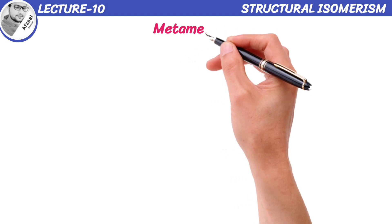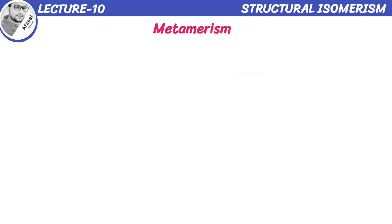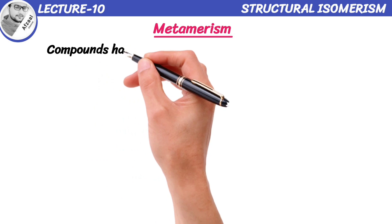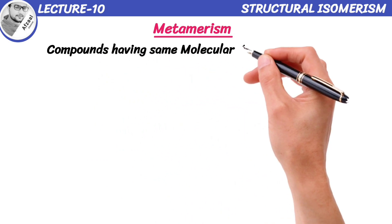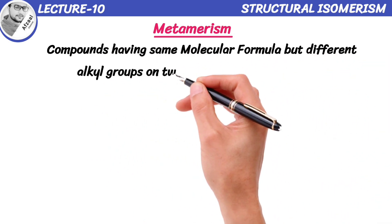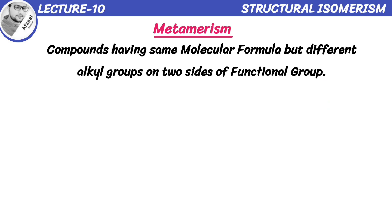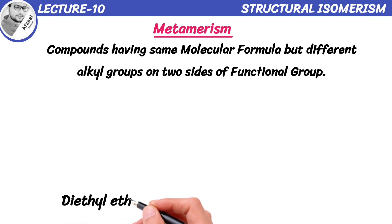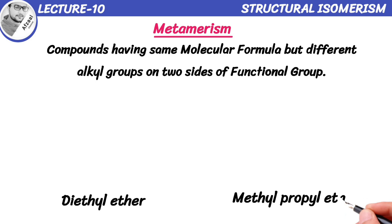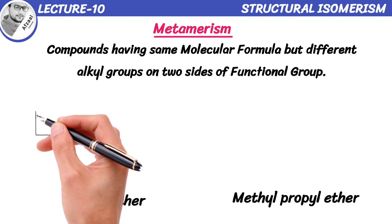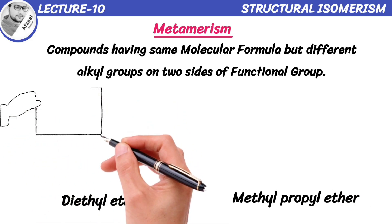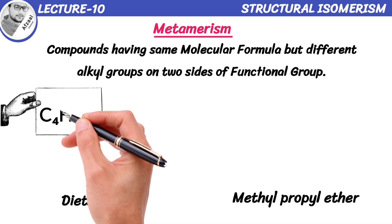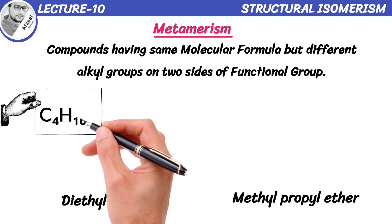Now we are going to discuss another type of isomerism known as metamerism. Compounds having the same molecular formula but different alkyl groups on two sides of a functional group. Let's talk about diethyl ether and methylpropyl ether. Both of these compounds have the same molecular formula, which consists of 4 carbon atoms, 10 hydrogen atoms, and 1 oxygen atom.